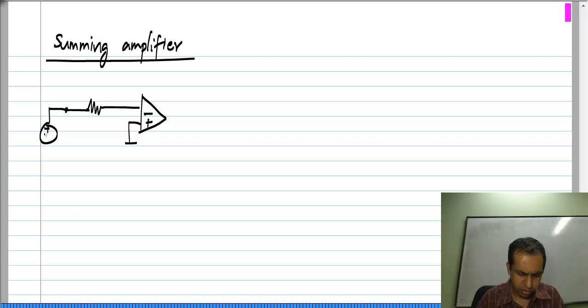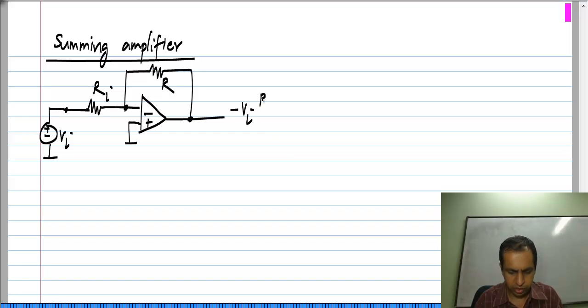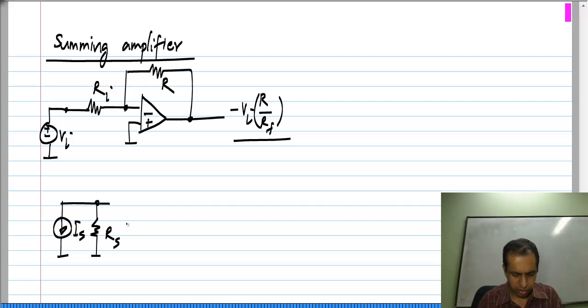The inverting amplifier is this, and the output voltage is minus V i times R by R F. Alternatively, we can think of it as some current source which is imperfect and let me call this R S.